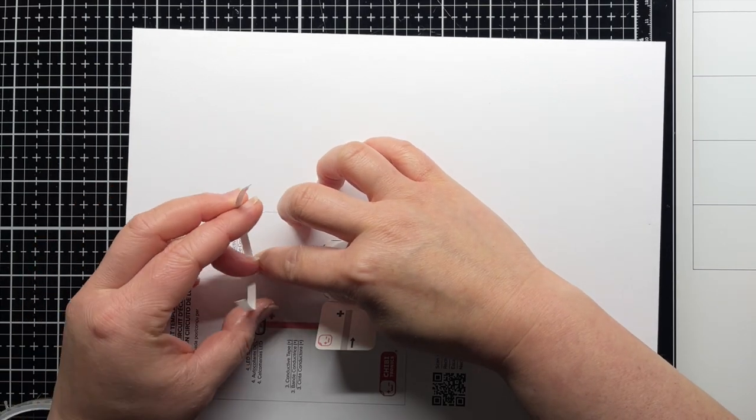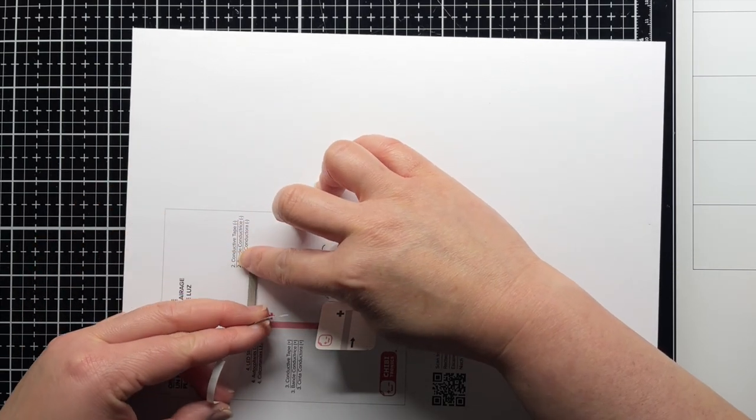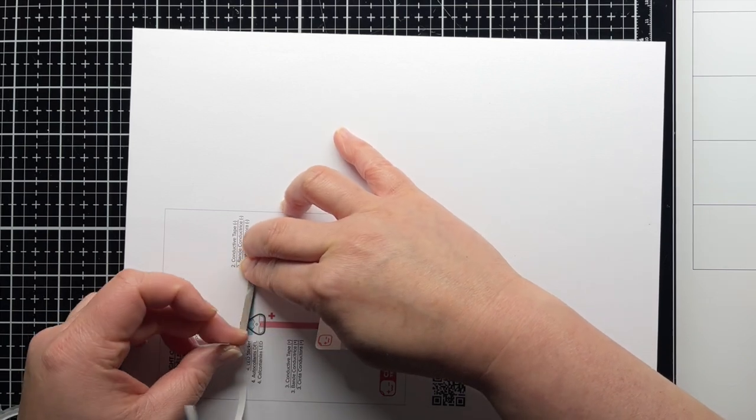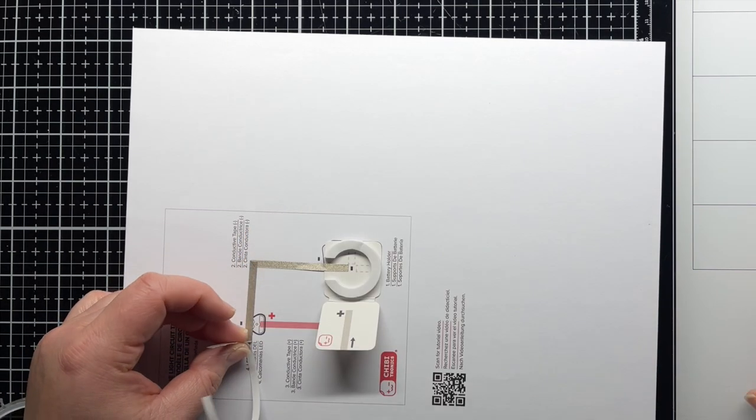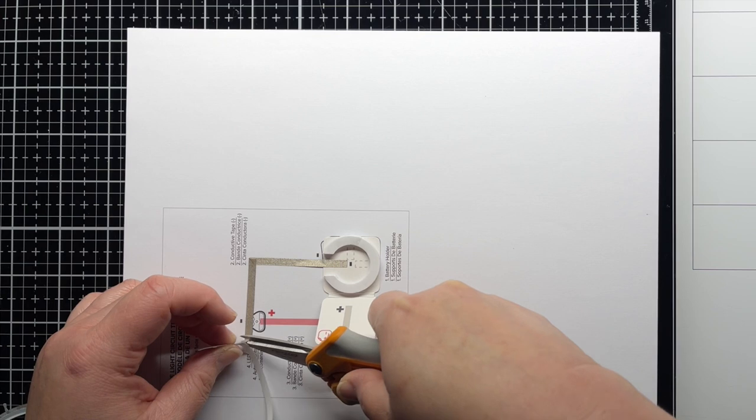Continue running the tape until you reach the smaller negative point of the sticker outline. Cross over the sticker outline and then trim off the excess.